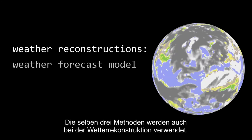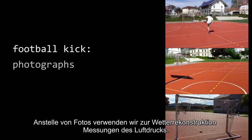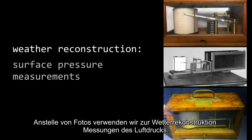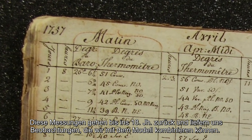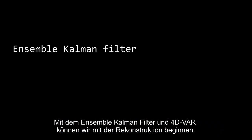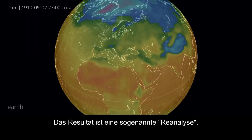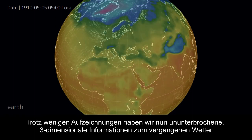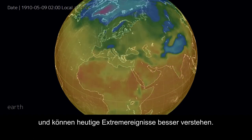The same methods are applied to make weather reconstructions. We obviously don't use the incline throw, but a complex weather forecast model. The same way we used photographs in the football example, we now take surface pressure measurements. These measurements date back to the 18th century and provide us with a series of observations that we can combine with the model. Using the Ensemble-Kalman filter and 4D Var, we now initiate our reconstruction. The end product is a so-called re-analysis. Despite sparse observation, we now have three-dimensional, continuous data for the weather of the past and a better understanding of today's extreme events.